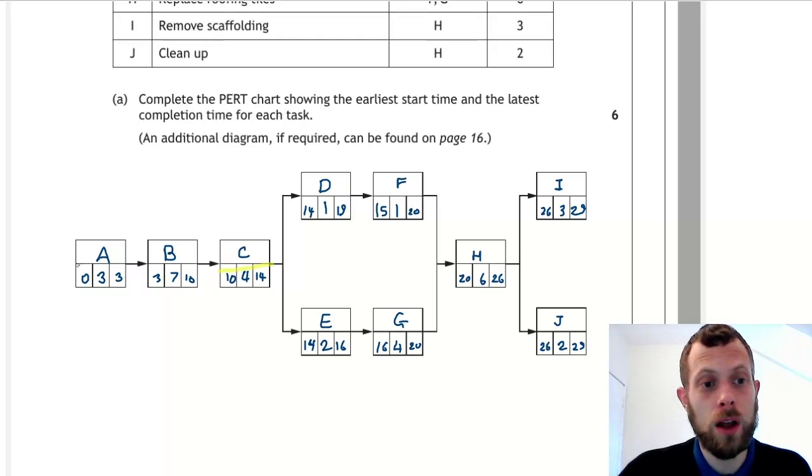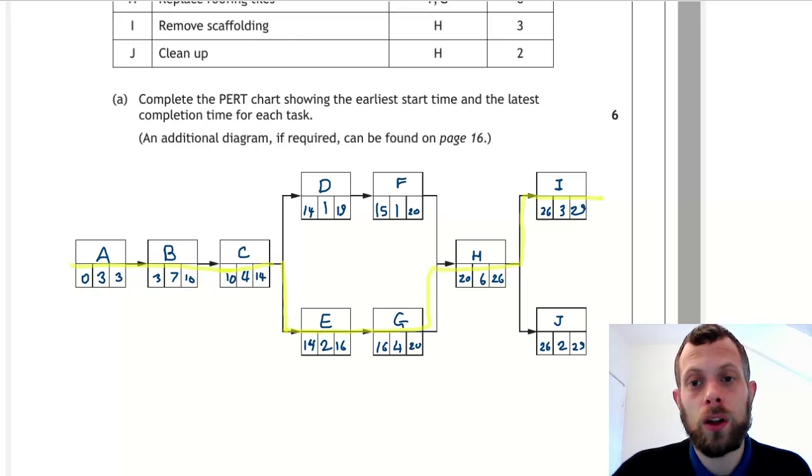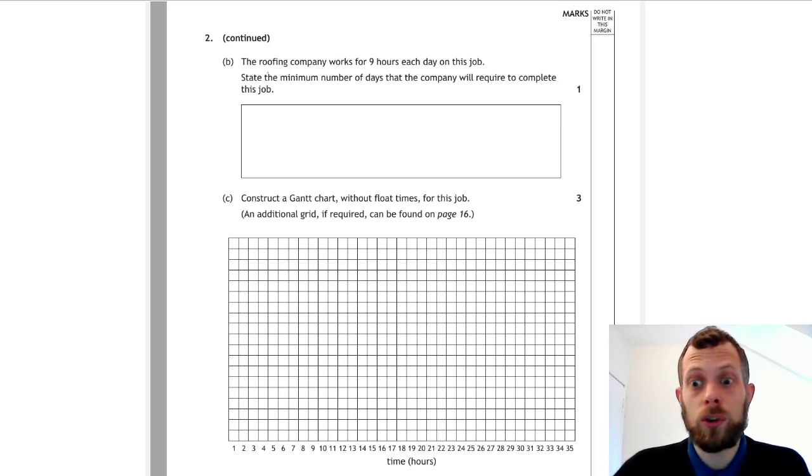For example, 10 plus four is 14. That will be true for any of the tasks which are on the critical path. So 14 plus two is 16, 16 plus four is 20, and so on. These are the tasks with no float time. The other ones do have float time, so 14 plus one is not 19, etc.